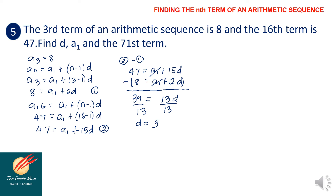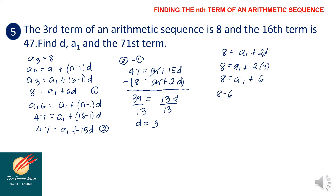Since we now know d, we can find the first term using equation 1: 8 equals a sub 1 plus 2 times 3, so 8 equals a sub 1 plus 6. Subtracting 6 from both sides: a sub 1 equals 2.